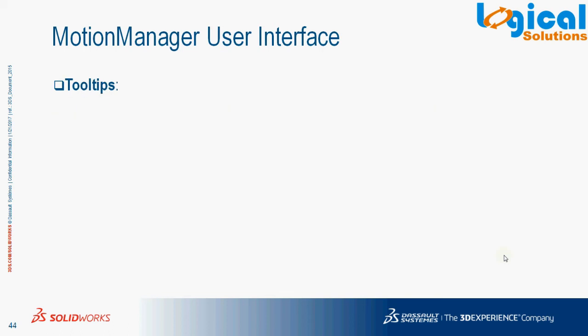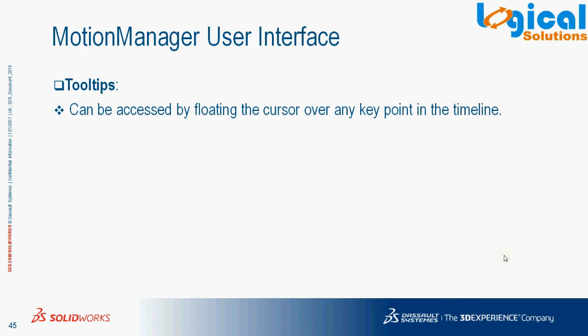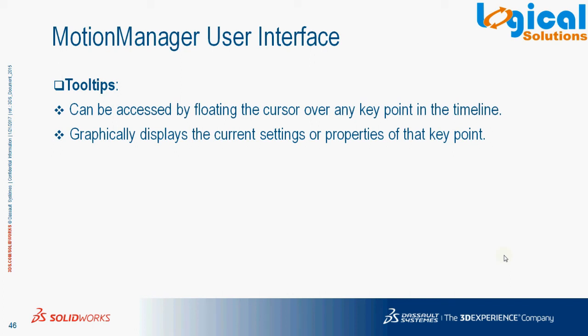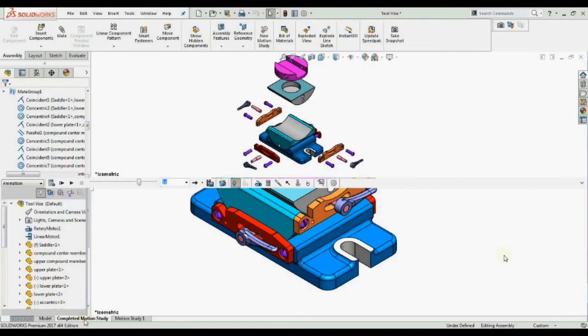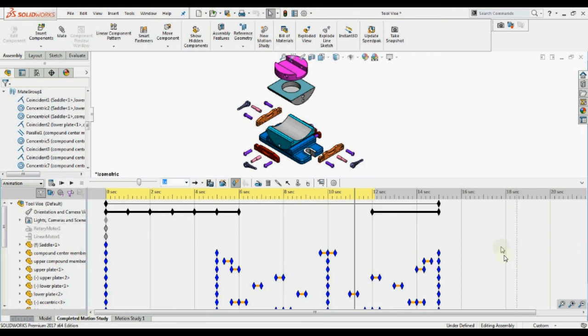Next, Tool Tips. Tool tips can be accessed by floating the cursor over any key point in the timeline. This displays the current properties of the key point, including the component name, move component display, and other properties. These key points are used to control the animation, and you can observe various key points with different colors in the interface.